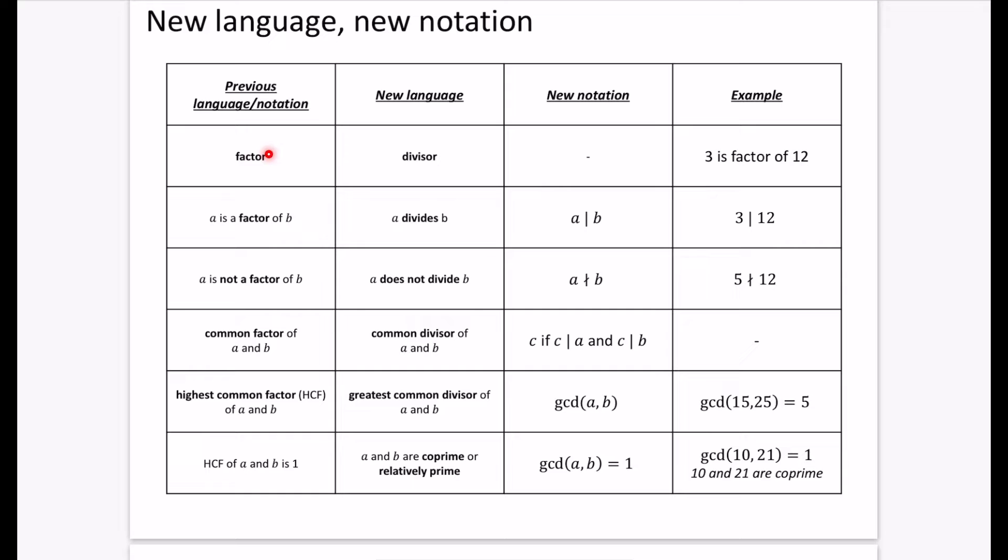So previously, when we would have called a number a factor, we would now call that number a divisor. So there's no notation for that. But we would say 3 is a factor of 12. So we could now actually say that 3 is a divisor of 12. So if a is a factor of b, we can now say that a divides b. So instead of saying that something is a factor of it, we say that a divides b. And we just do this line that goes in between them. So this notation a divides b means that this number is a factor of this number. And you can kind of tell 3 is a factor of 12 here.